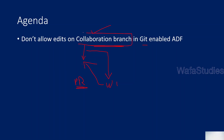In real time, when you have a collaboration branch where the Data Factory code will go, we should not allow people to directly perform any kind of edits there. For example, if they want to implement a new pipeline, what they ideally should do is create a new branch — a worker branch or feature branch — add the new implementations there, and finally merge the changes back to the collaboration branch using the PR process. This is the best practice. Accidentally, people may try to add their changes into the collaboration branch directly, and we want to avoid that. That's what we are going to see in this video.